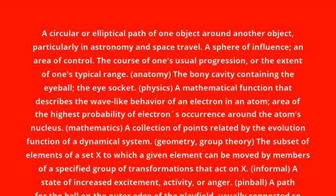Physics: a mathematical function that describes the wave-like behavior of an electron in an atom; the area of the highest probability of an electron's occurrence around the atom's nucleus. Mathematics: a collection of points related by the evolution function of a dynamical system.